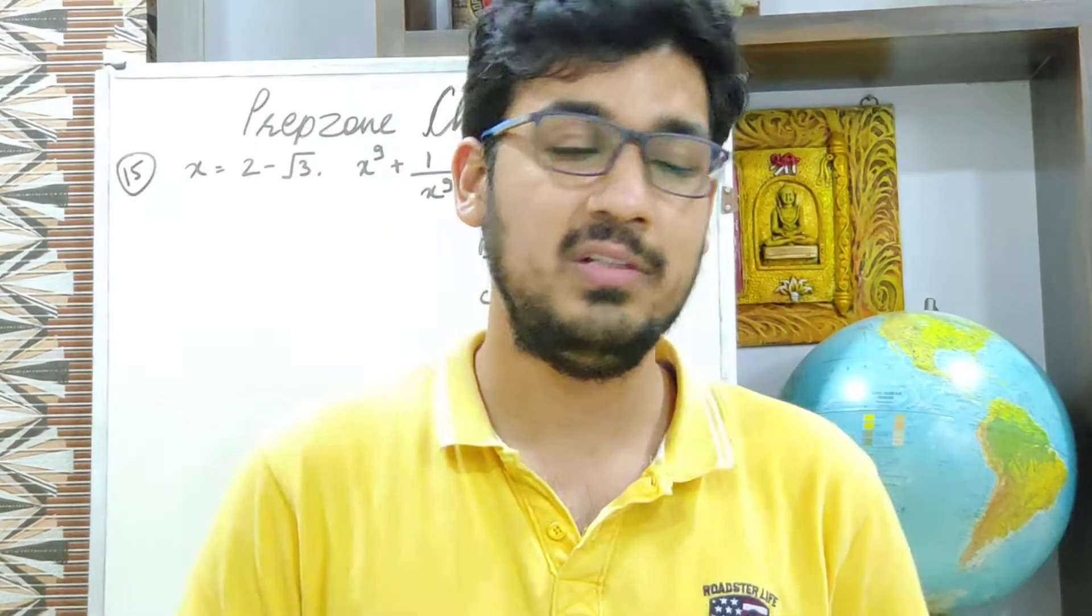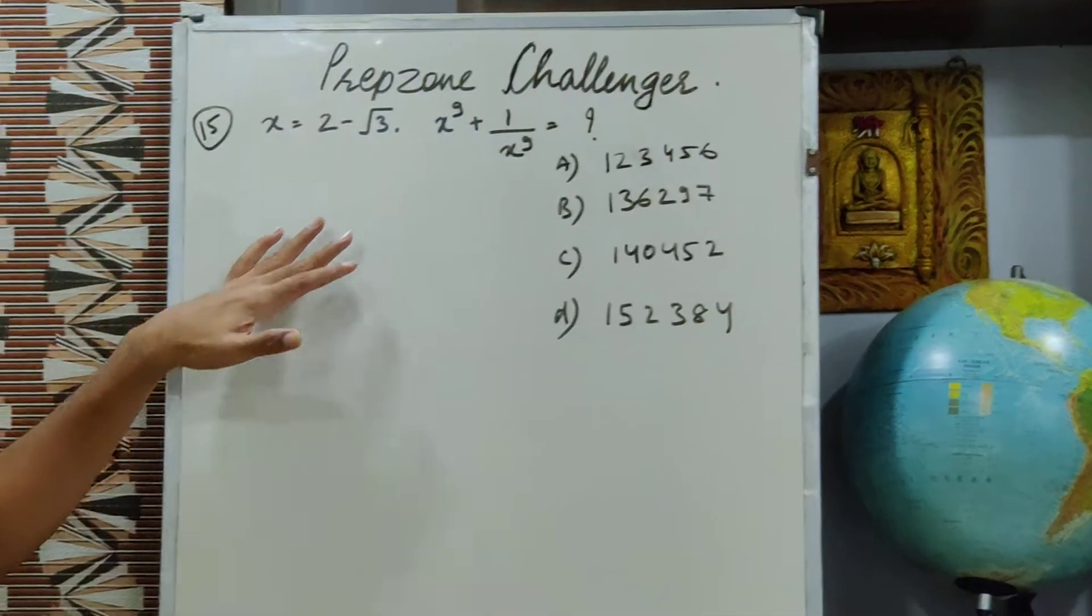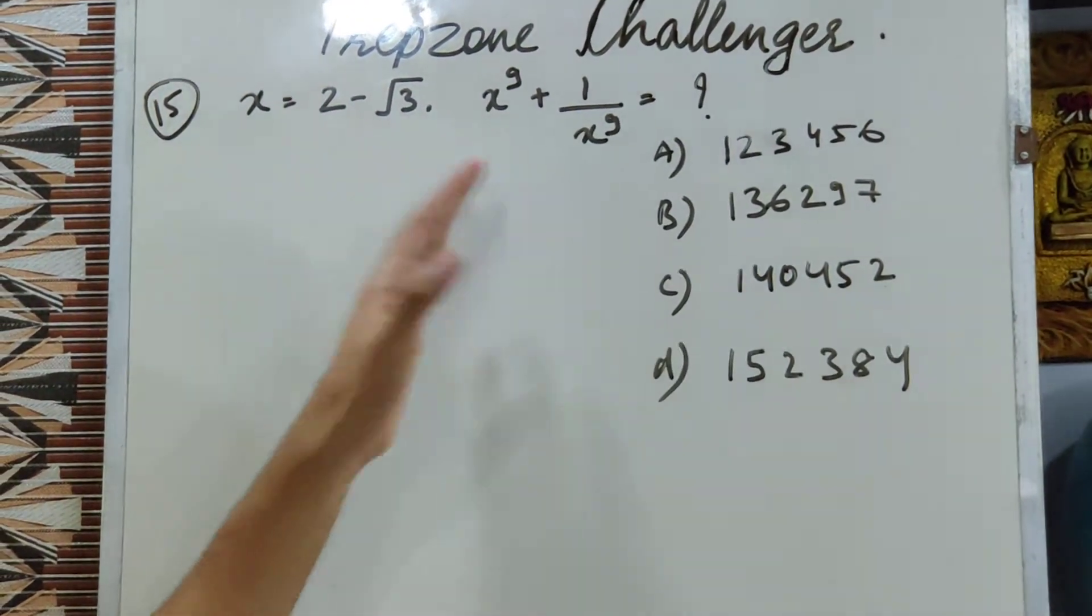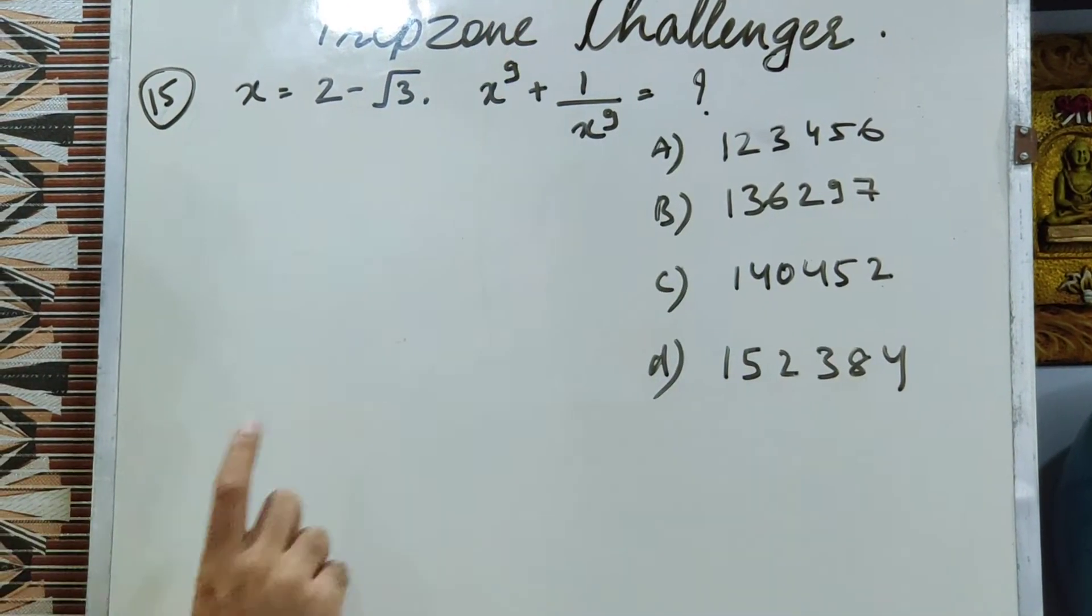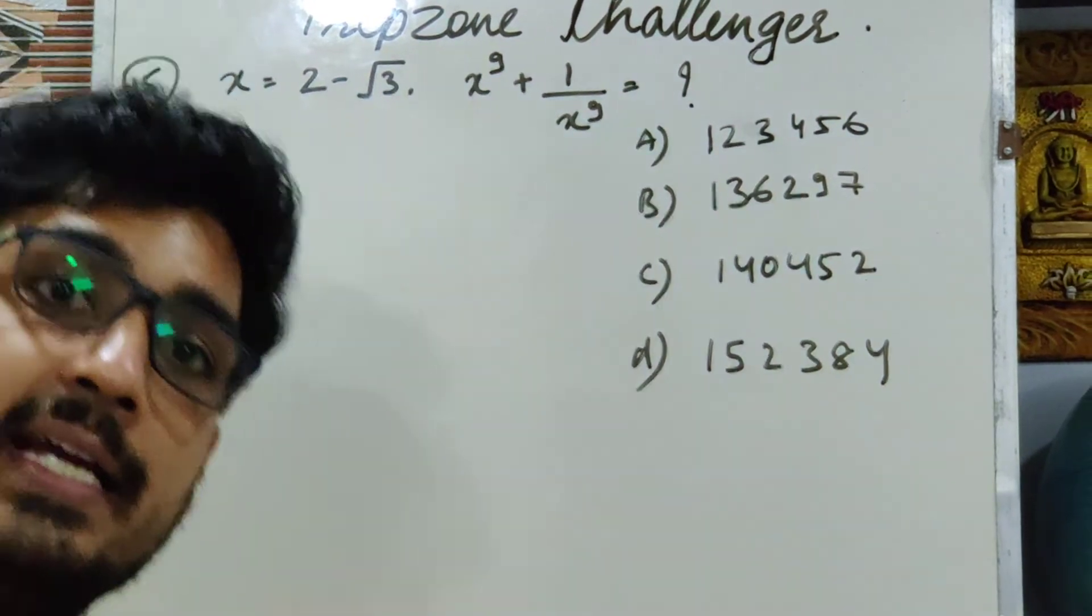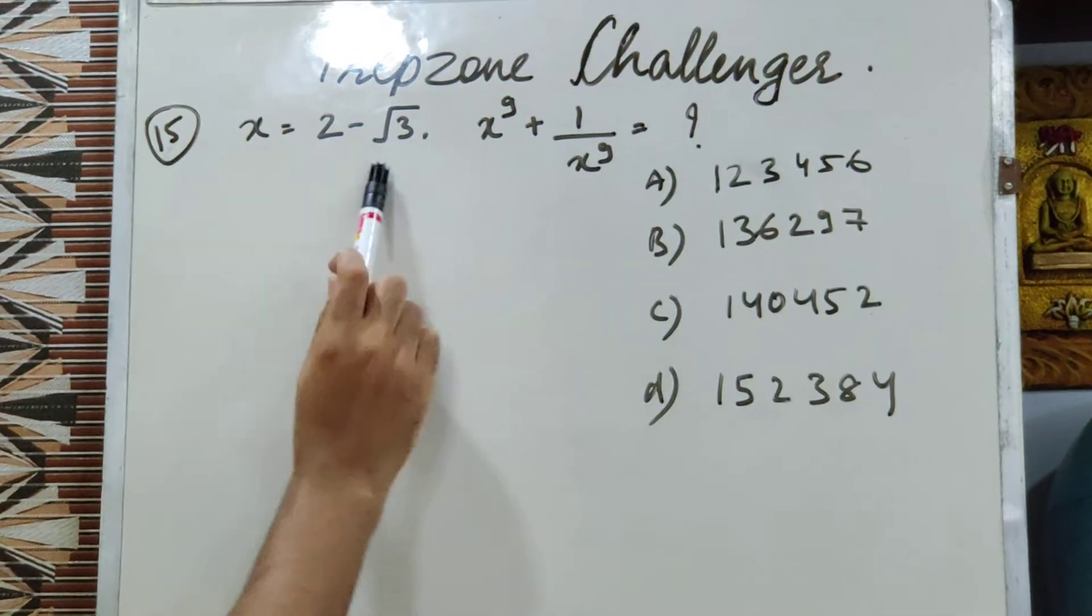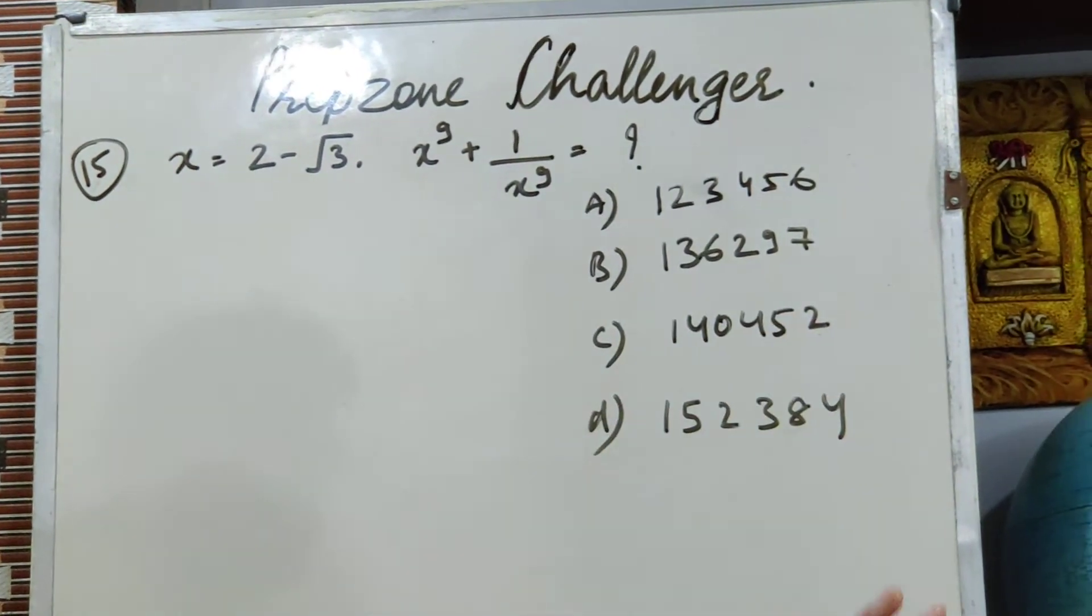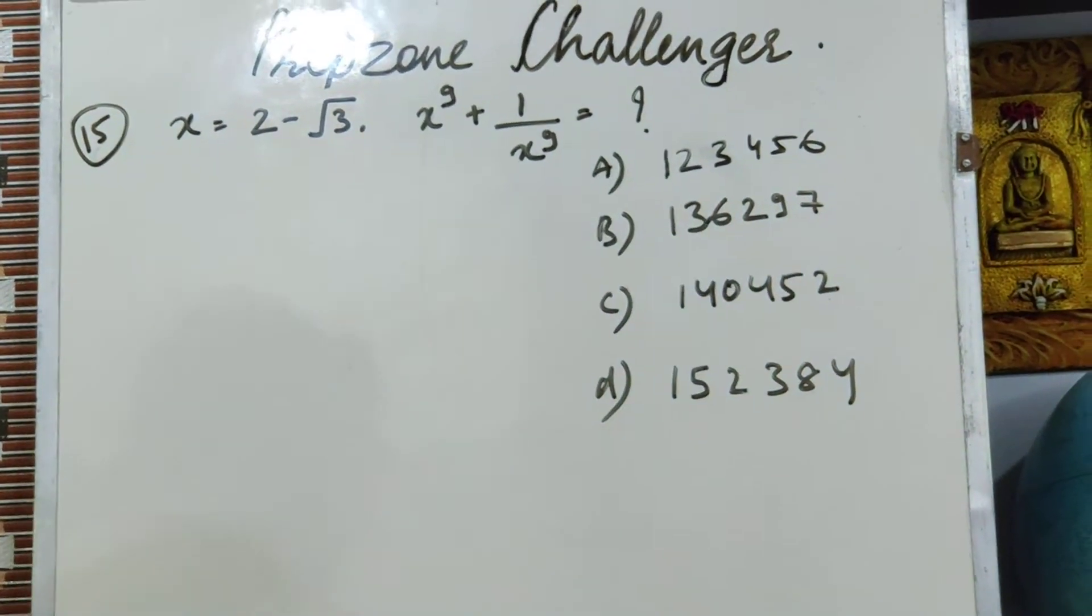So let's very quickly move on to the question. The question is x is 2 minus root 3. You need to find out x to the power 9 plus 1 upon x to the power 9. You have 4 very scary options given to you.